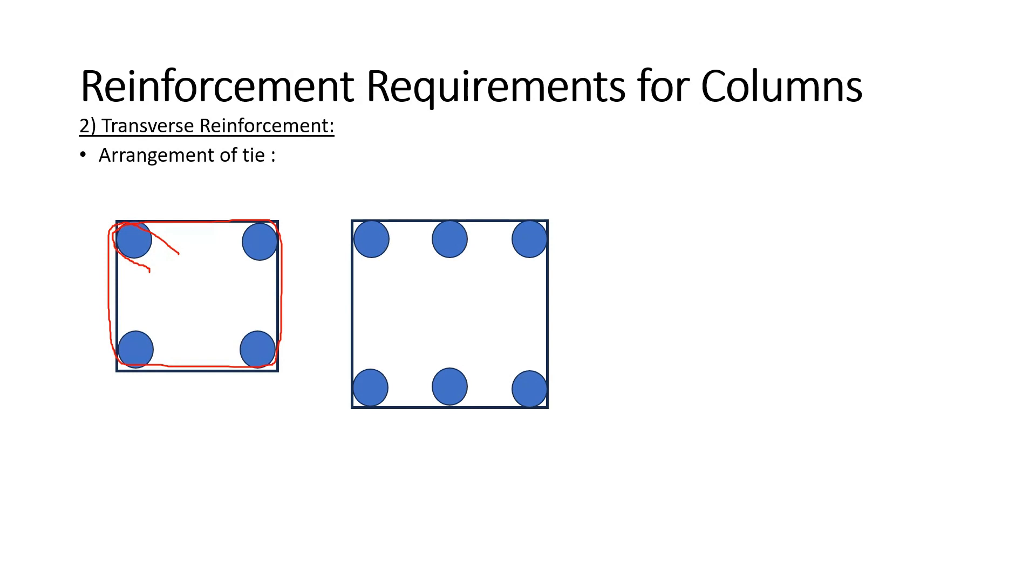If you have 6 bars like this then what we can do is that we can tie these 4 extreme bars like this and then we can tie these remaining 2 bars like this.